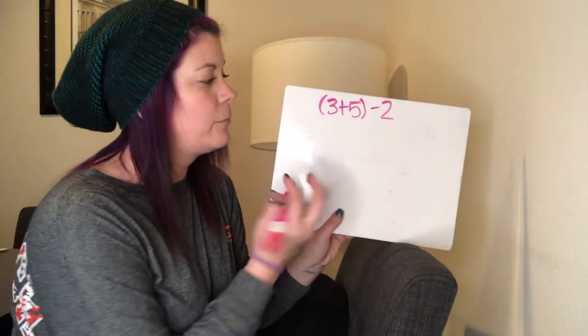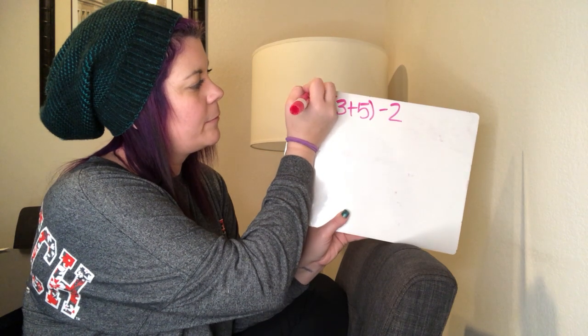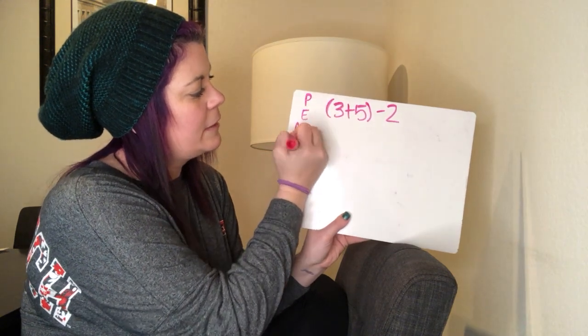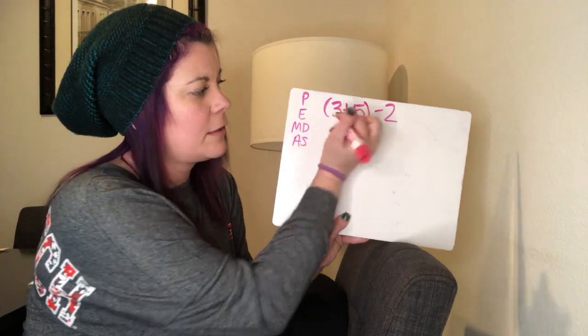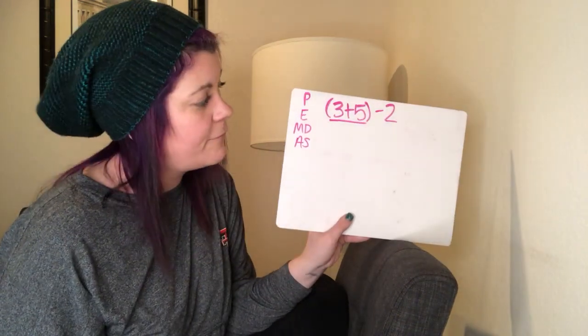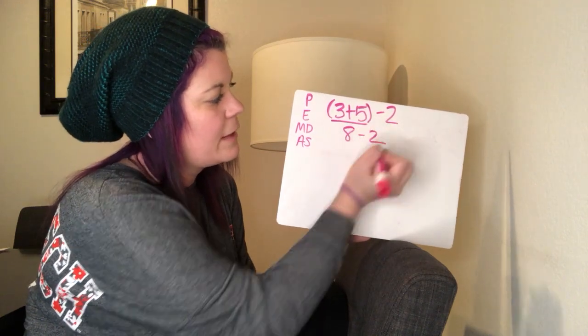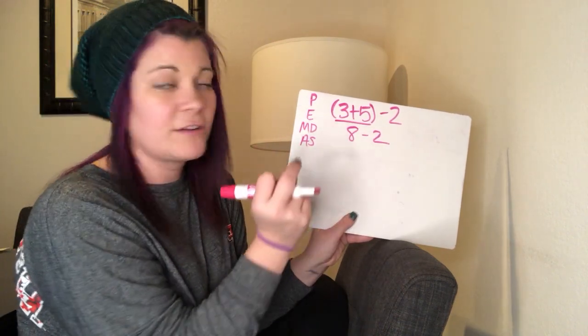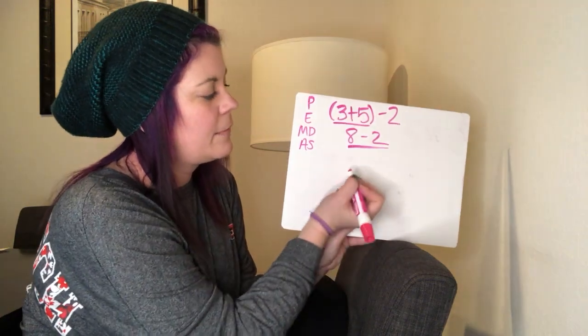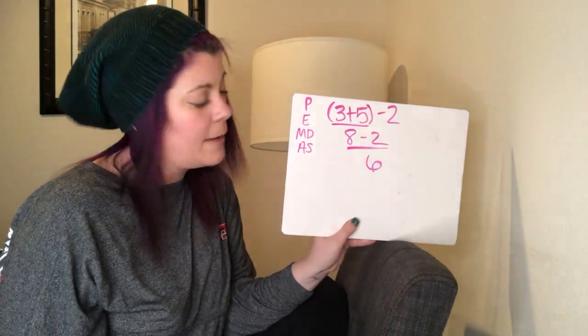Let's look at a problem. We follow PEMDAS — going through the checklist. P stands for parentheses, and there are parentheses, so I'm going to underline it because that's what I'm doing first. Three plus five is eight, and then I bring everything else down. There are no exponents, no multiplication or division, but there is subtraction. Eight minus two gives us six. I like to underline what I'm doing and build a little inverted pyramid as I work down.